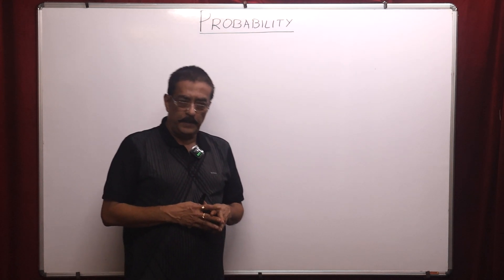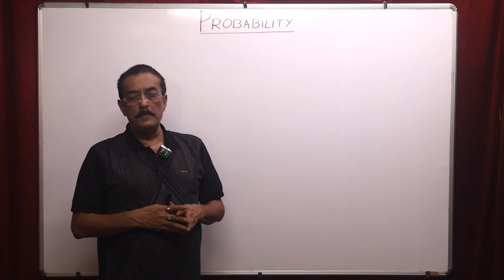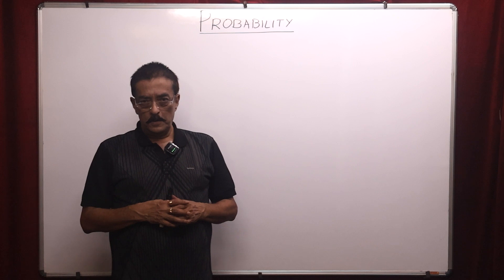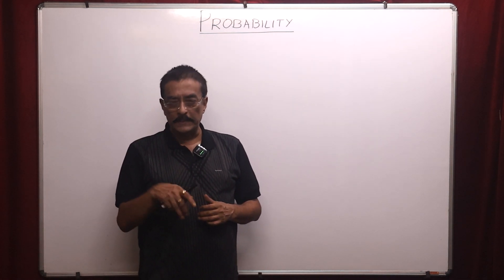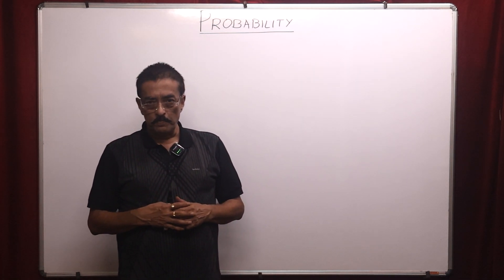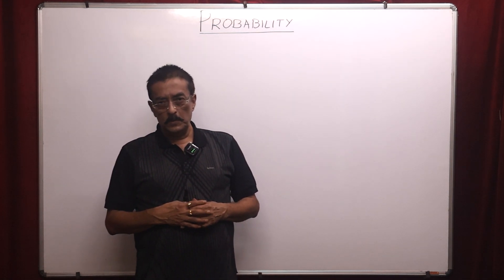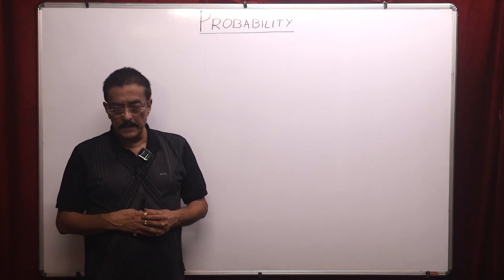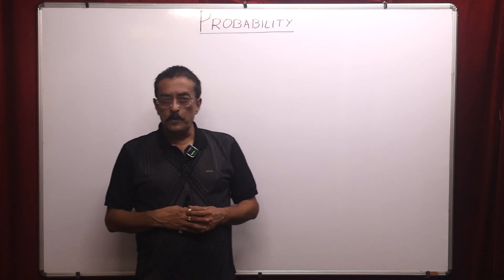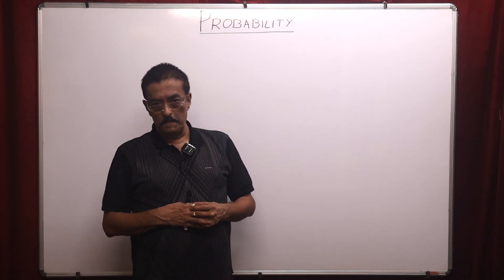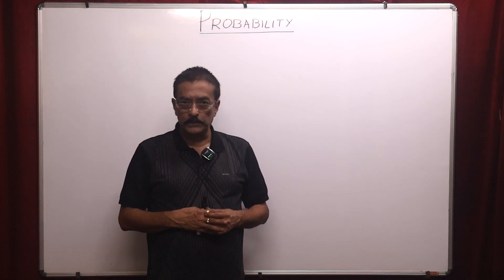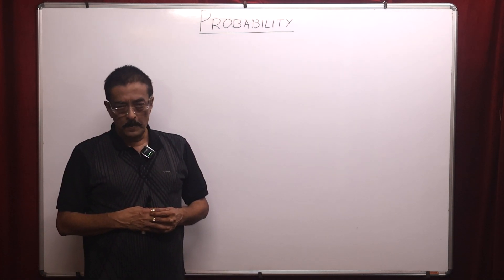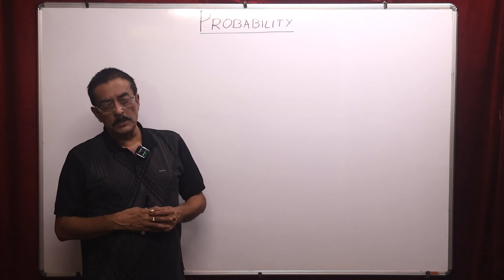General probability can be divided into four different areas. Number one: problems of coin tossing. Second area: problems on playing cards. Third area: problems on throwing dice. And fourth area: problems on balls.